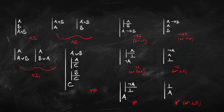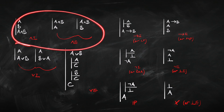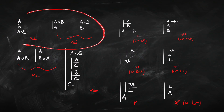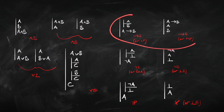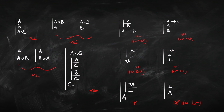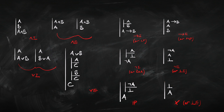here are all of our rules. We've got introduction and elimination rules for each connective. Here are the ones for conjunction, here are the ones for disjunction, here are the ones for the conditional (if-then), here are the ones for negation, and here are the ones for the falsum constant — that's the constant that is always false.